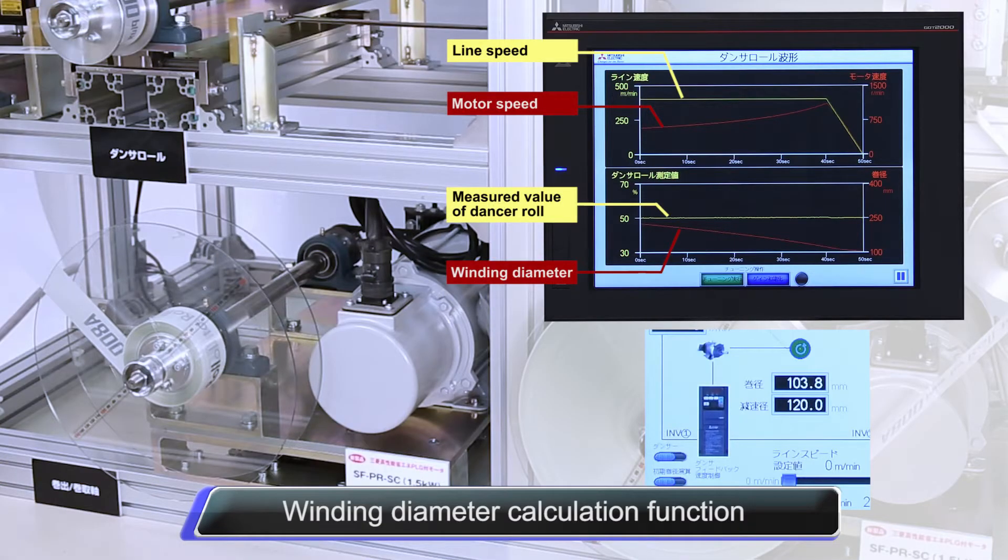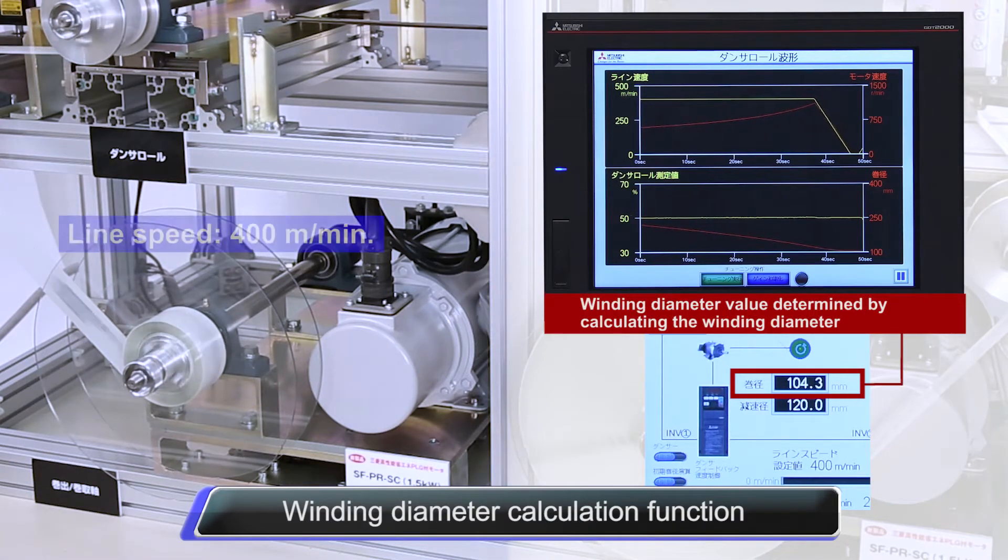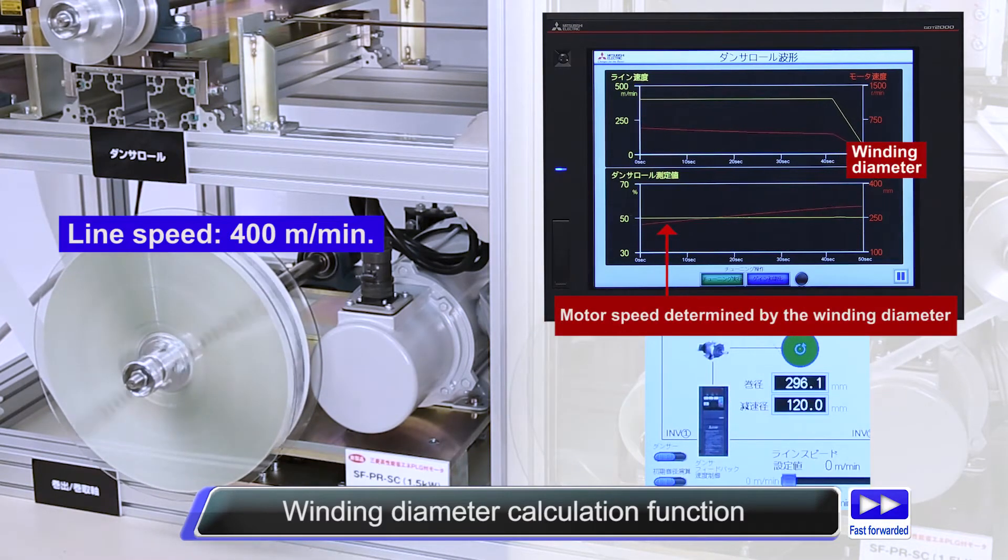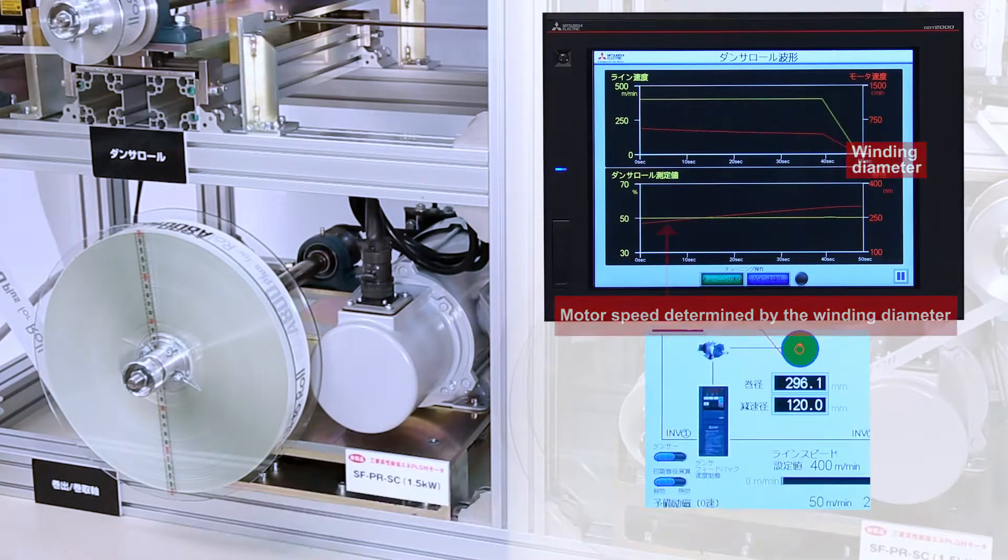By inputting the line speed into a standalone Mitsubishi Electric FRA800 Roll-to-Roll Inverter, it is possible to calculate winding diameters. Various types of adjustments are possible through processing the winding diameter calculations with the inverter.